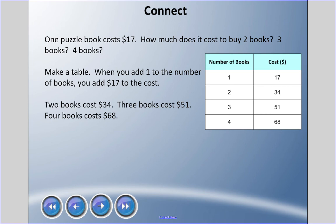When you add one to the number of books, you add seventeen to the cost. Notice that in the 'number of books' column it goes up by one each time, and the cost goes up by seventeen dollars each time we add a book. So two books cost thirty-four dollars, three books cost fifty-one dollars, and four books cost sixty-eight dollars.